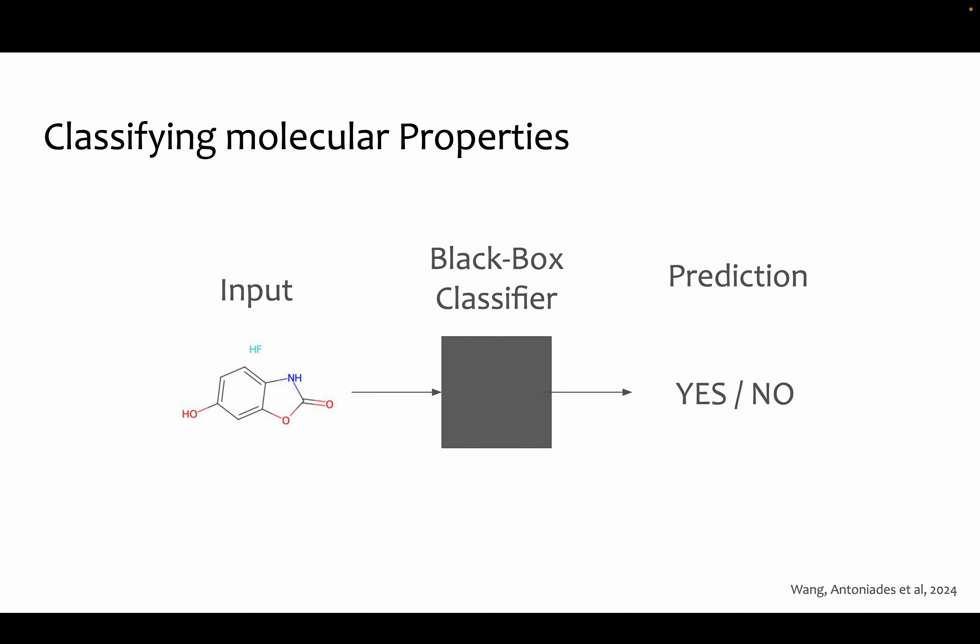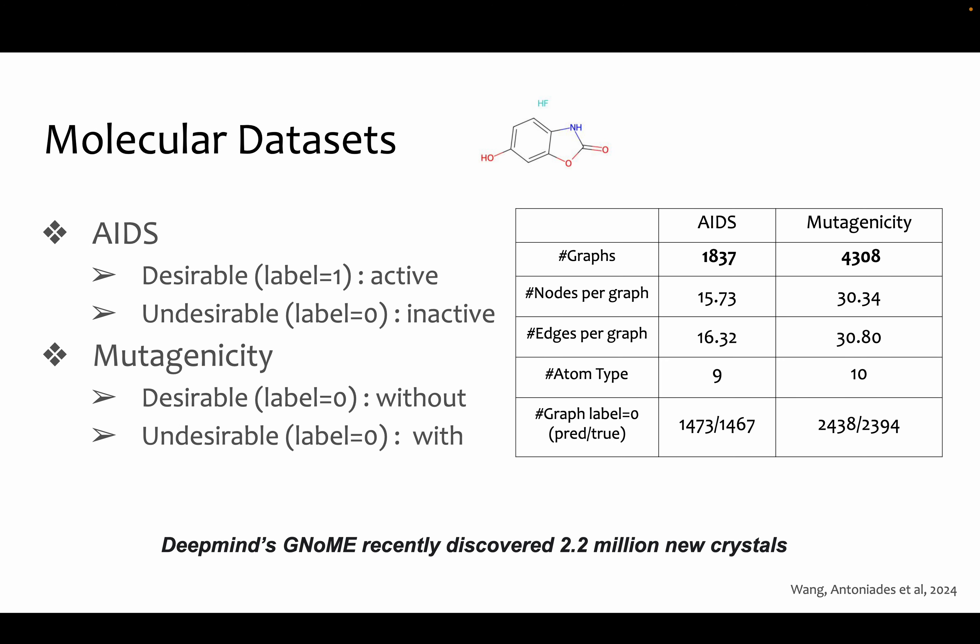In the typical molecular classification setting, we have an input molecule and a black box classifier tasked to generate a prediction. We can have many different datasets where we have some kind of input molecule and whether it contains the desired attribute or not, and then we can train classifiers for them.